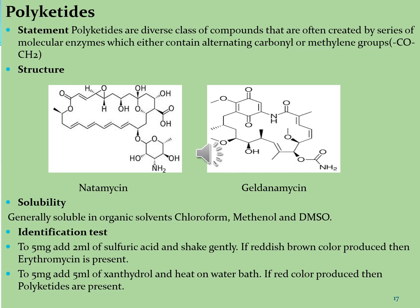Polyketides are insoluble in water but soluble in organic solvents including chloroform, methanol and dimethyl sulfoxide. Identification tests: in the first test, 5 mg sample is added to 2 ml of sulfuric acid and shaken gently — a reddish brown color indicates erythromycin, a class of polyketides. In the second test, 5 mg sample extract is added to 5 ml of xanthohydrol and heated on a water bath — red color indicates polyketides are present.